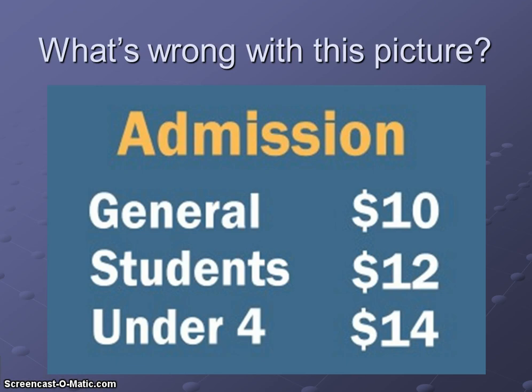To get us thinking about the topic, take a look at this pricing scheme here. General admission: $10.00. Students: $12.00. And under four, admission is $14.00. Clearly this is not something that we are used to seeing. If anything, we're used to seeing an opposite pricing strategy, because with this posted pricing strategy, families are less likely to attend and people with small children are less likely to attend the event.